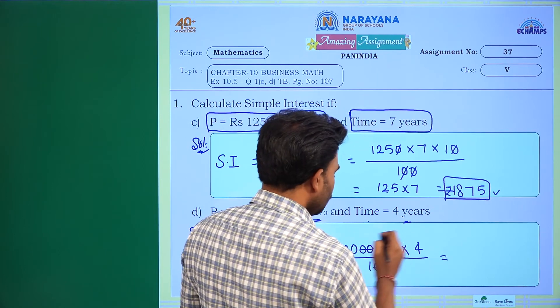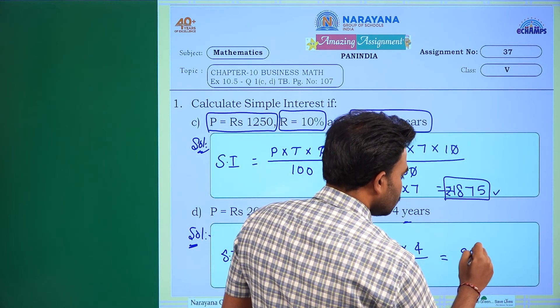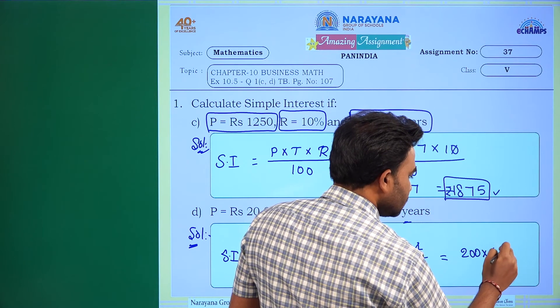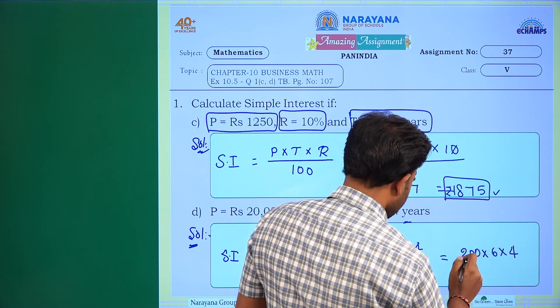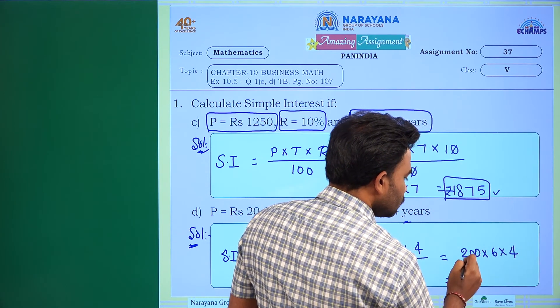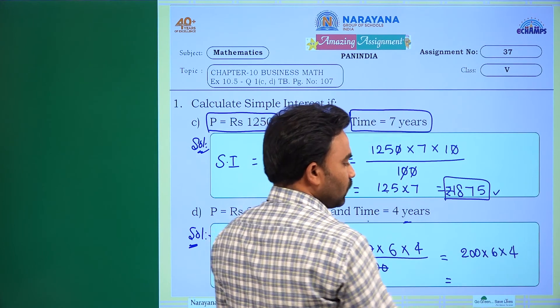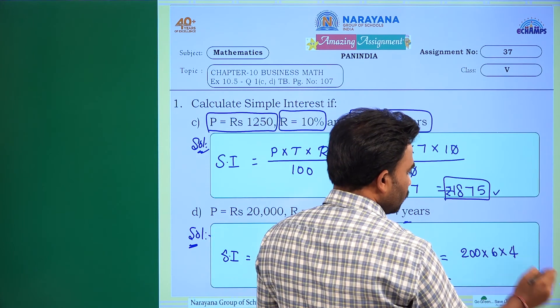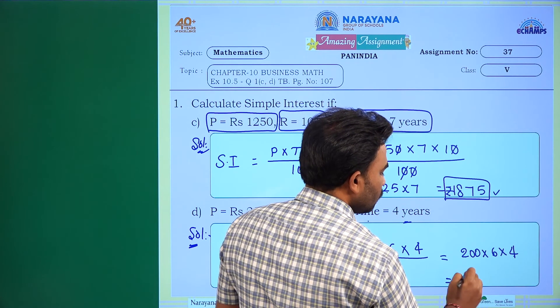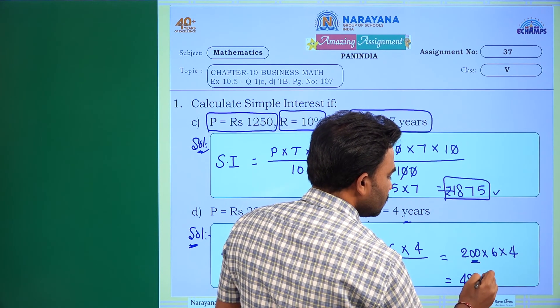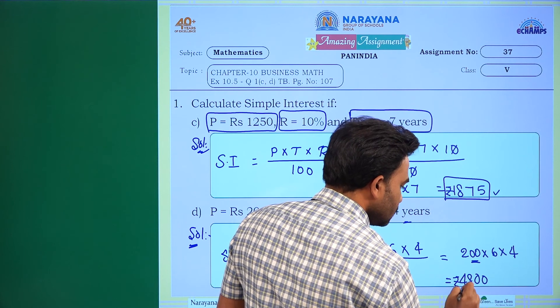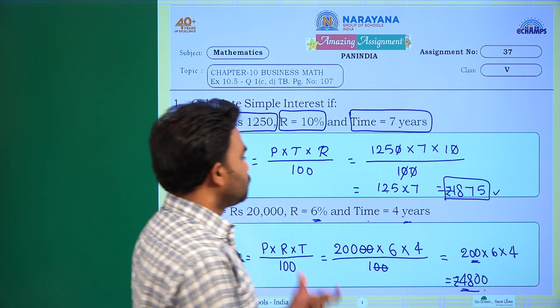It equals 200 into 6 into 4. It equals 2×6 is 12, 12×4 is 48, and see here two zeros are there, so it's Rs 4800. This is the simple interest of this problem.